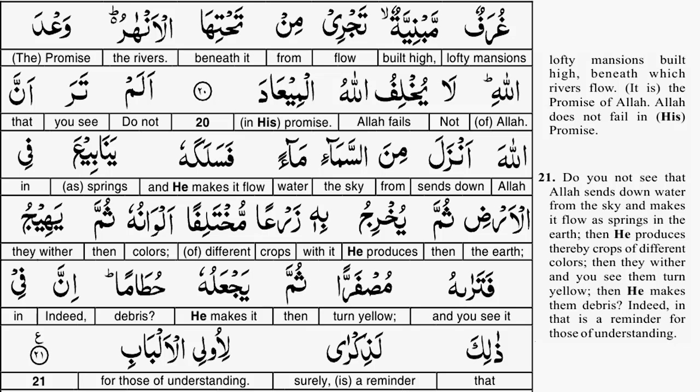Yanabi'a is a plural of yanbu'a. Naba'a is when water gushes out, and yanbu'a is used for a spring because a spring is a crack or a hole in the ground or somewhere between rocks from which water is coming out. Where did that water come from? From somewhere in the ground — it's the rain water that was absorbed.